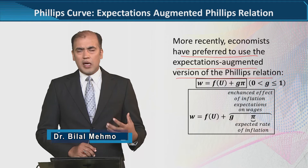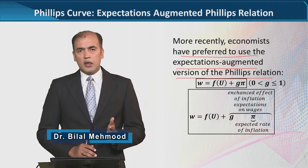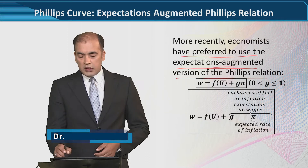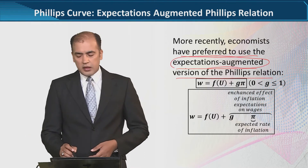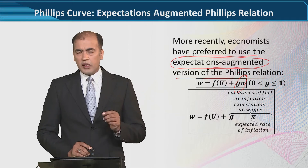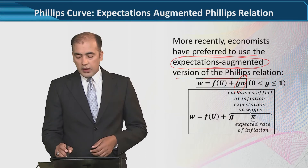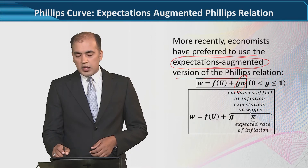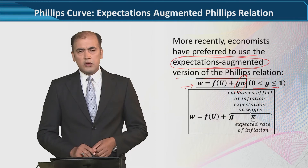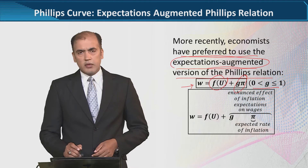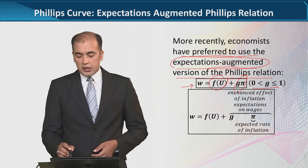So after the development of the adaptive Phillips relation, we are now coming towards a more recent version which incorporates the role of expectations. This is the expectations-augmented Phillips curve, where pi basically represents expectations, g is the coefficient, and w introduces us to the original Phillips relation. Unemployment is there with its function, which is not explicitly mentioned.